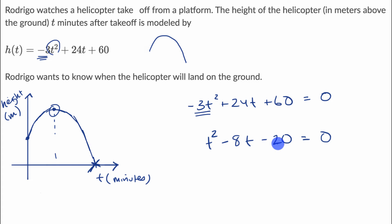And now, can I think of two numbers whose product is negative 20, so they would have to have different signs in order to get a negative product, and whose sum is negative eight. So let's see, what about negative 10 and two? That seems to work. So I could write this as t minus 10 times t plus two is equal to zero.